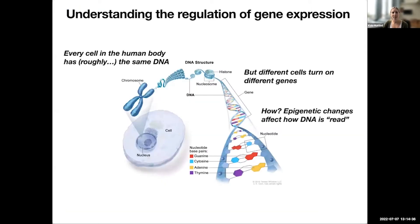The central aspect of biology that motivates me personally, and I think a lot of the work we're going to hear about today, is the regulation of gene expression. Every cell in the human body has roughly the same DNA, but different cells are able to turn on different genes. And the question is really, how does that happen? How do different cells with the same DNA turn on different genes?